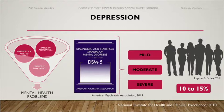Severity of depression is classified using the Diagnostic and Statistical Manual of Mental Disorders, 5th edition criteria as: mild — five or more symptoms with minor functional impairment; moderate — symptoms of functional impairment between mild and severe; and severe — most symptoms present and interfering with functioning, with or without psychotic symptoms.